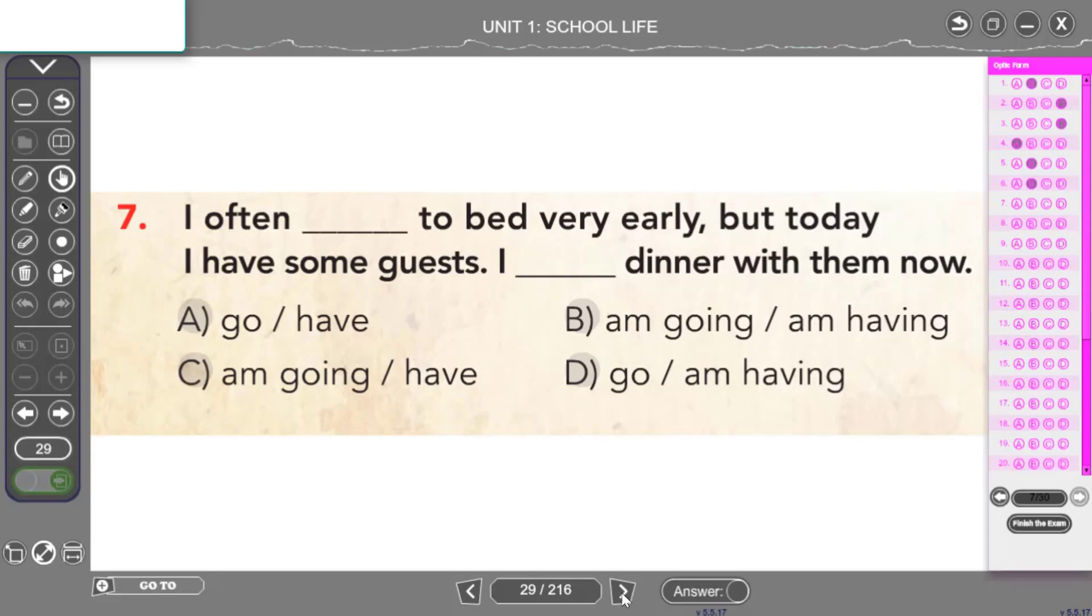I often go to bed very early but today I have some guests. I am having dinner with them now. İlk cümlemizde gördüğünüz gibi often yani sıklıkla anlamına gelen sıklık zarfımızı kullanmışız. Bu da hangi zamana ait bir sıklık zarfıydı? Geniş zamana ait sıklık zarfıydı. I often ben sıklıkla yatağa erken giderim diyeceğiz. Yine often'dan sonra fiilimin birinci halini kullandığım için go yazmam gerekiyor. O da A ve B şıklarında var. İkinci boşluğuma bakacağım. But today I have some guests. Ama bugün bazı misafirlerim var. Onlarla şu anda akşam yemeği yiyorum diyeceğim. Yani bu kısmı da şimdiki zamanda kurmam gerekiyor. Öznem I olduğu için am yardımcı fiilimi kullanacağım. Fiilime -ing takısı ekleyeceğim. O da B şıkkında var.